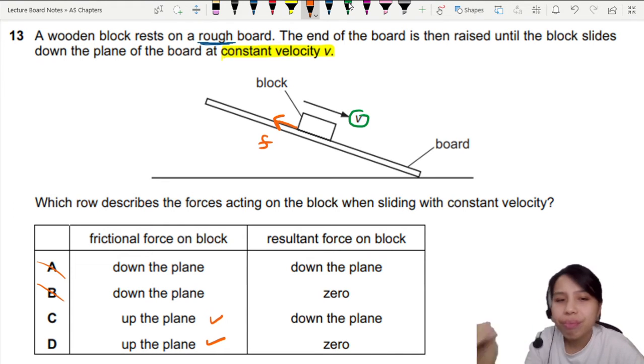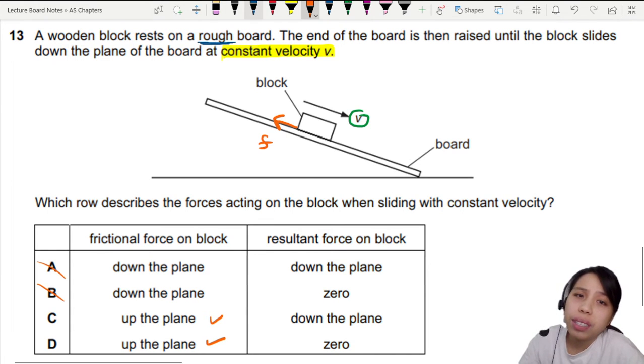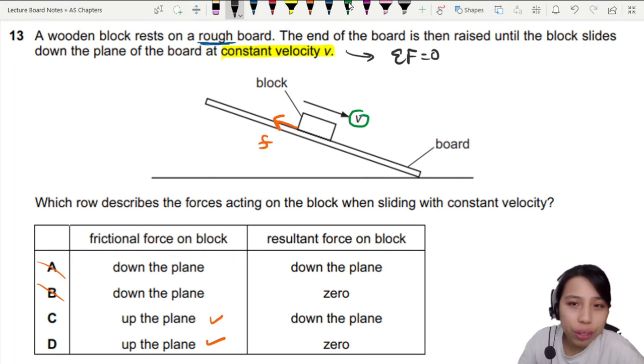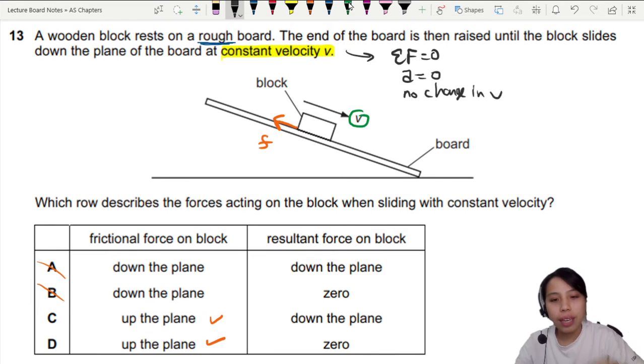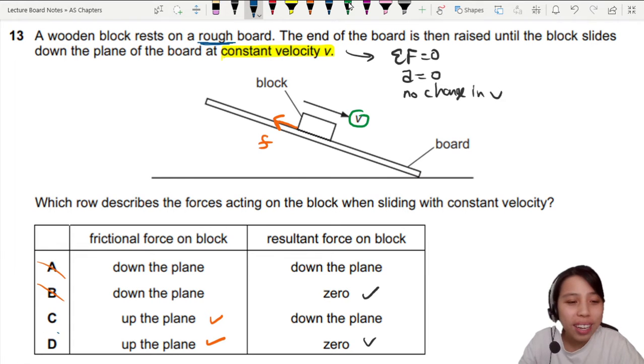Then we think about the resultant force on the block. Is there a resultant force on the block? Hint is constant velocity. Constant velocity means there is no net force. Because if net force is zero, acceleration is zero. Therefore, no change in velocity. So you can say net force is zero. Zero or zero. So best choice you can choose here is D.